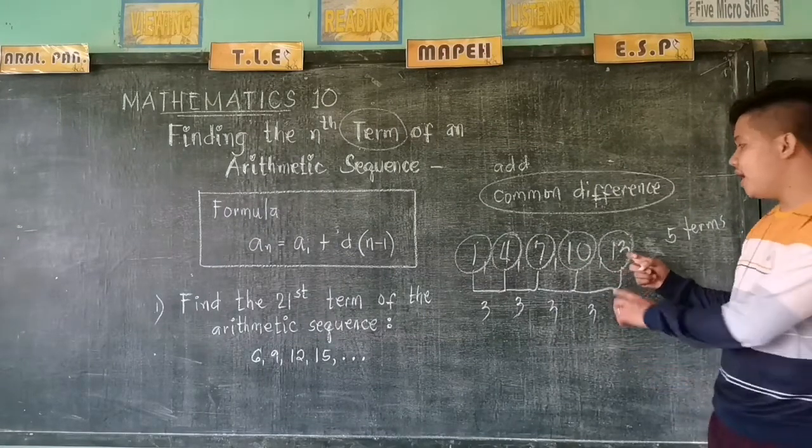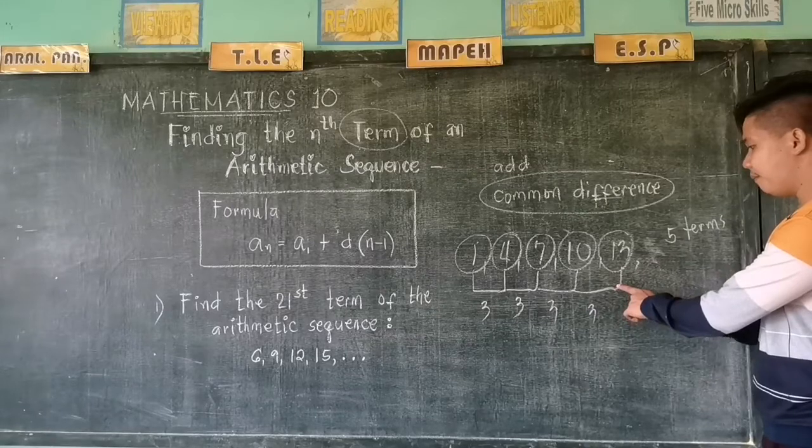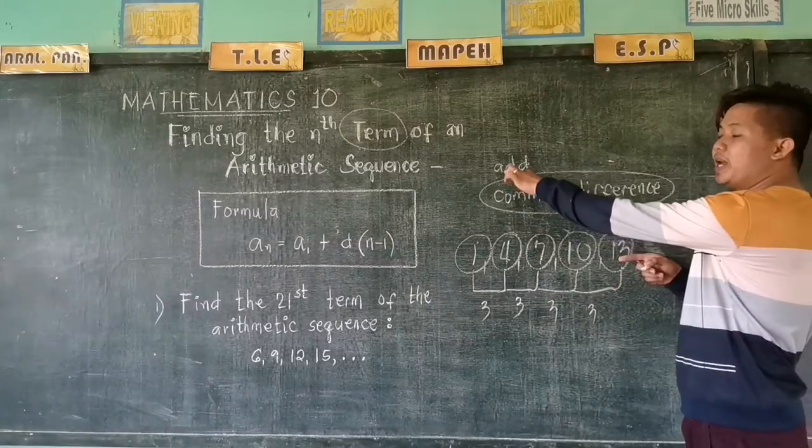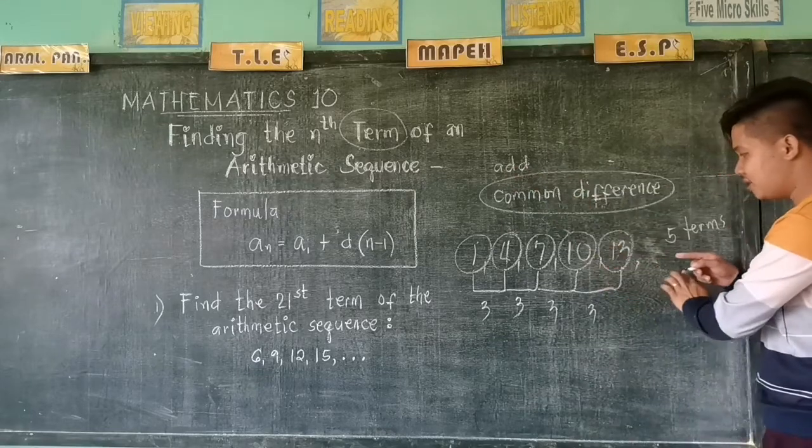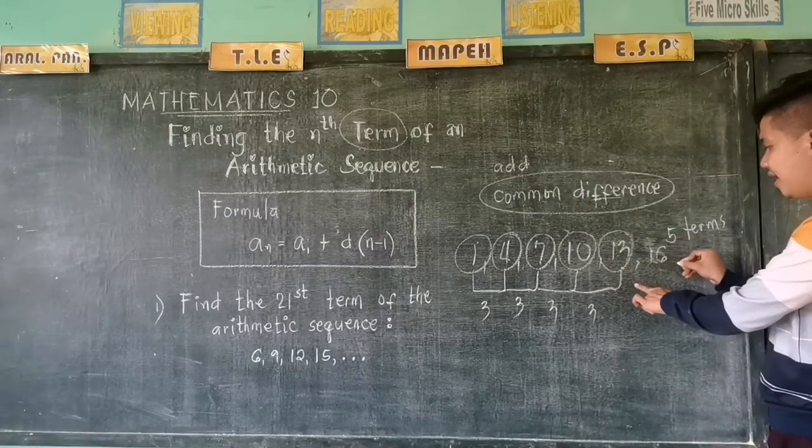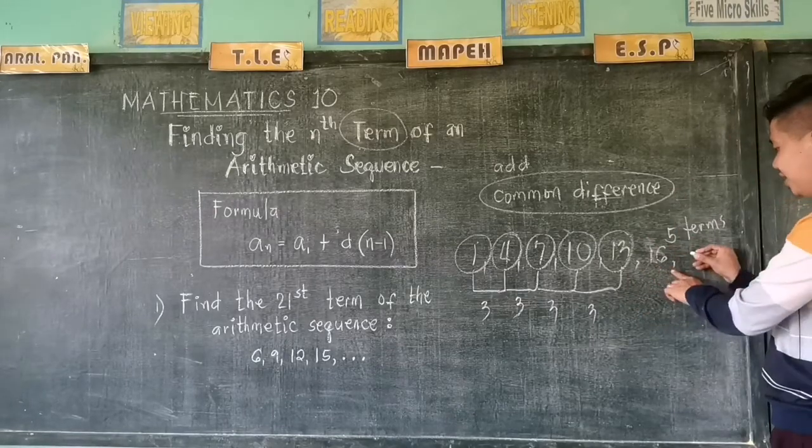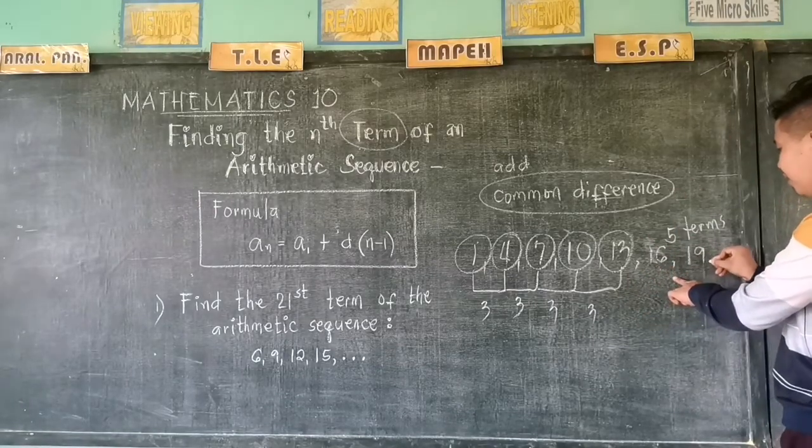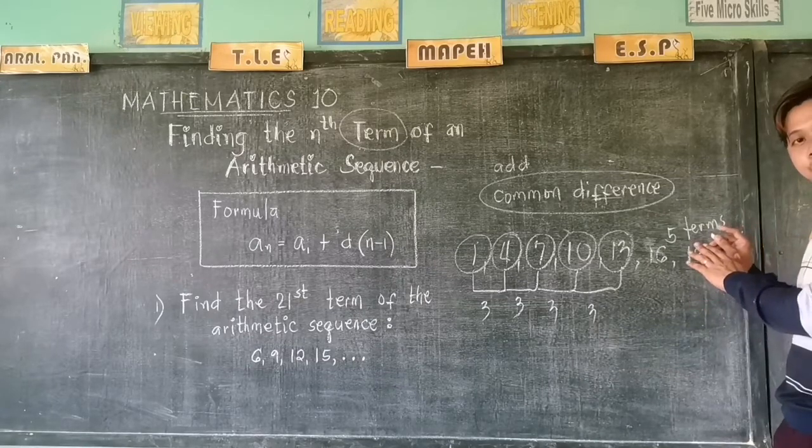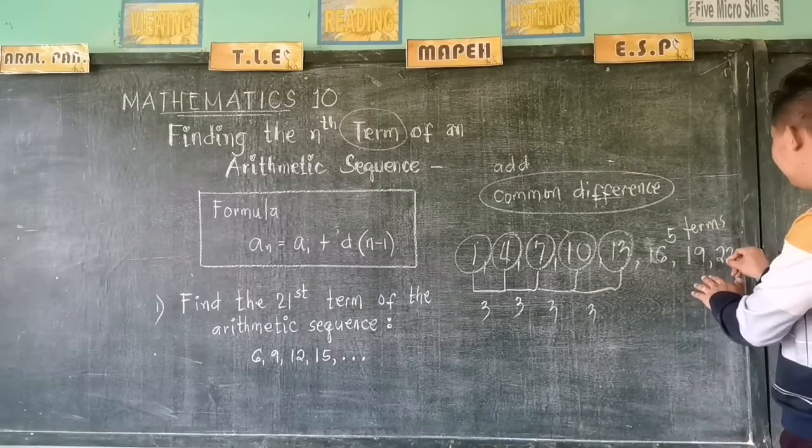If I will say, what's the next term? Just add. As what I have said a while ago, simply add to get the next term. So plus 3, we have 16, plus 3, 19, plus 3, we have 20... 22.